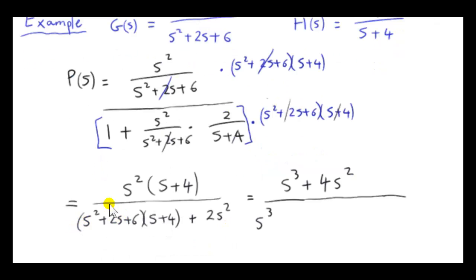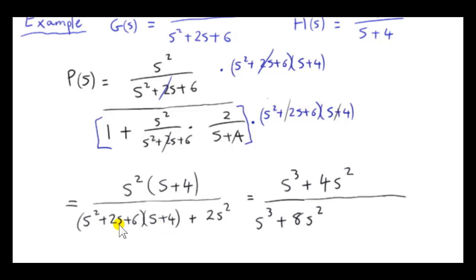Underneath we get a single s³ term. Then for the s² term, we have 4s² plus 2s² plus another 2s², giving 8s². For the s term, we have 2s times 4, that's 8s, plus 6s, giving 14s. And for the constant term, we have 6 times 4, which is 24.